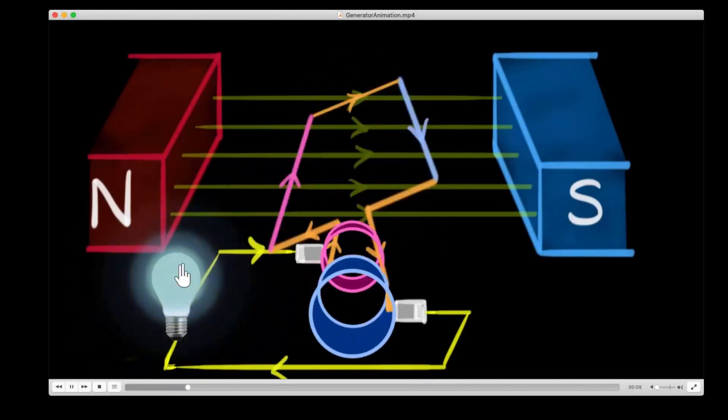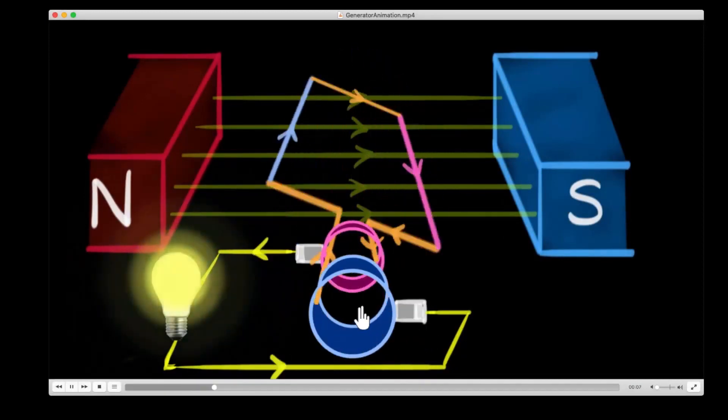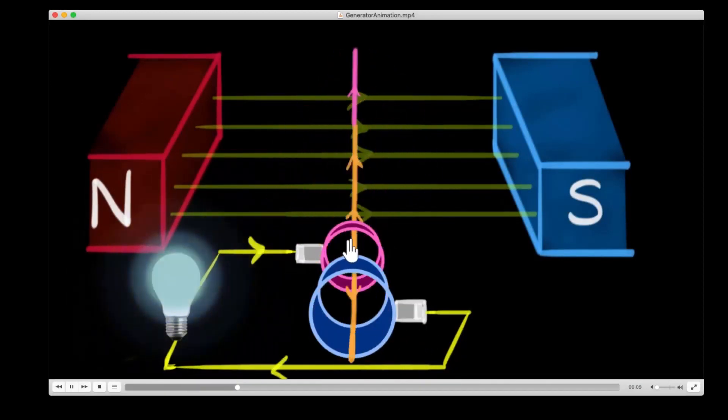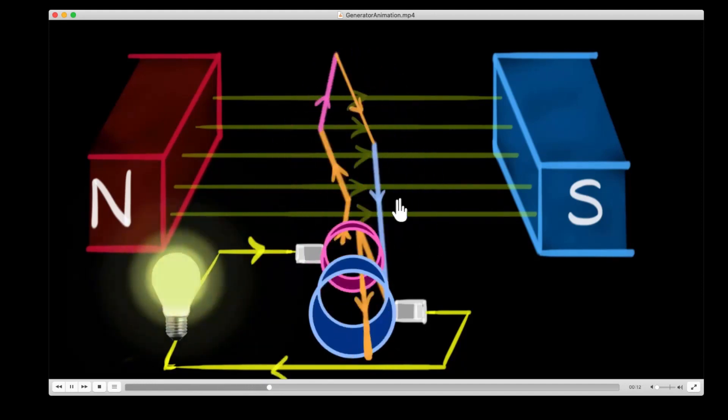Remember, it's the strength of the magnetic field, the speed of the conductor, and the angle at which it cuts through the field, that determine the magnitude of the induced current.